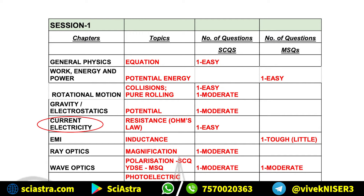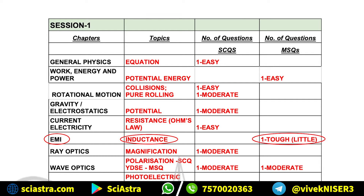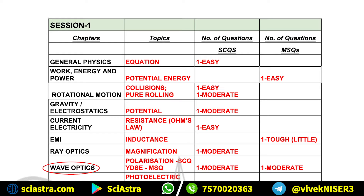From Current Electricity, one single-choice question came on resistance, that is Ohm's Law. Then a tough question came from EMI on induction — a slightly tough multiple-select question. From Ray Optics, a magnification question came as one moderate-level single-choice question. Then in Wave Optics, polarization — one single-choice question came — and YDSE, that is Young's Double Slit Experiment — both were at moderate level.